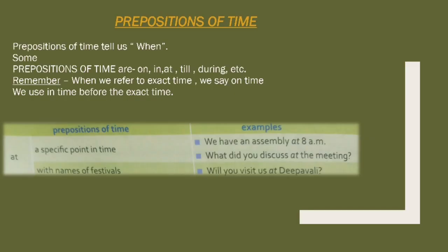Prepositions of time tell us when something happened. Some are: on, in, at, till, during. Note the difference between 'on time' and 'in time' — 'on time' means exactly at the scheduled time, while 'in time' means before the deadline. For example, if you have to arrive at 8 a.m., 'be on time' means be there at 8 a.m., but 'be in time' means arrive before 8 o'clock.